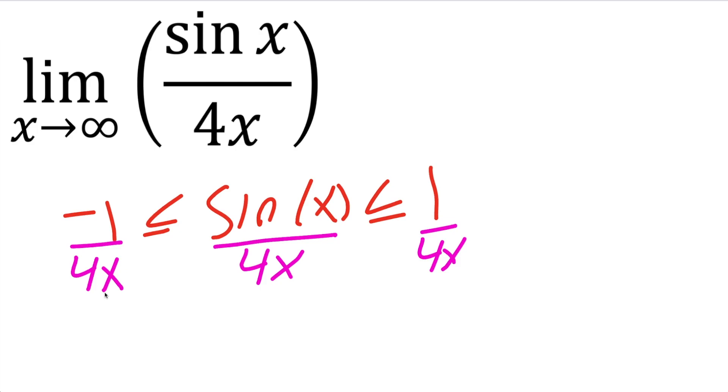What I'm applying is something called the squeeze theorem, where I don't know the information for this piece, but I can gather information for this piece and this piece. If the values are the same, I can narrow down my answer.